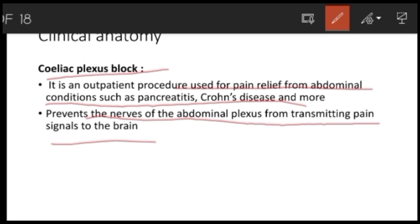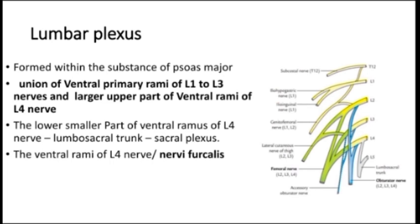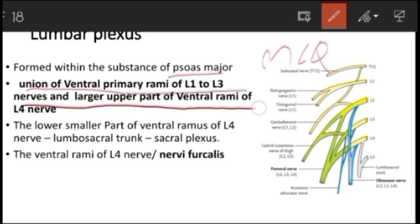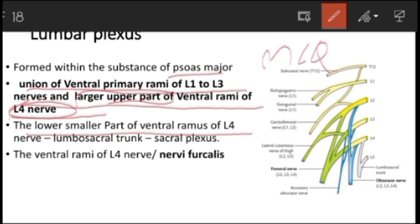Now let's discuss the lumbar plexus. The lumbar plexus is formed within the substance of the psoas major muscle — this is a very important MCQ point. It is formed by the union of the ventral rami of L1 to L3 nerves and the large upper part of the ventral ramus of L4. Only the large upper part of L4 forms the lumbar plexus.